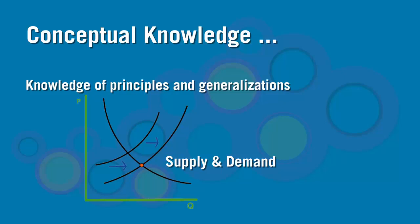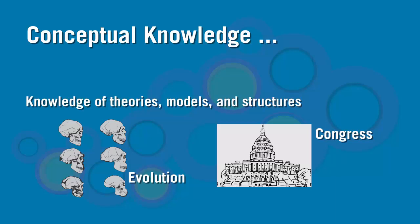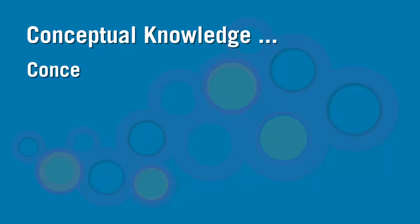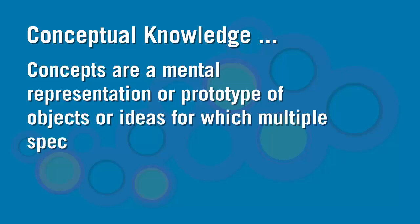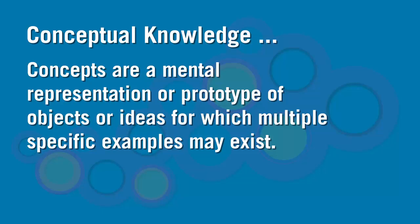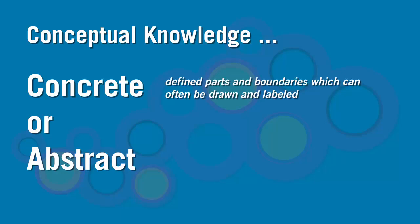Anderson suggests that examples of knowledge of theories, models, and structures may be the theory of evolution or the structure of Congress. Ruth Colvin-Clark suggests that concepts are a mental representation or prototype of objects or ideas for which multiple, specific examples may exist. Concepts can be concrete or abstract. Concrete concepts have defined parts and boundaries, which can often be drawn and labeled, whereas abstract concepts are difficult to directly represent with a labeled diagram. Let's think about a couple of examples here. Can you come up with a couple?